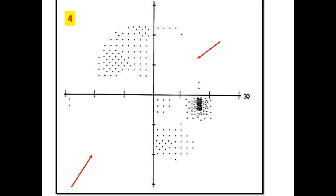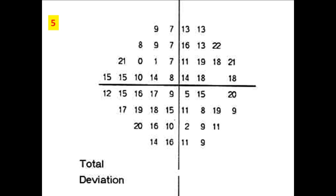The grayscale shows white scotomas, which are patches of abnormally light or entire areas of white tones. The total deviation numeric plot shows high false positive deviation from age-matched normal subjects.